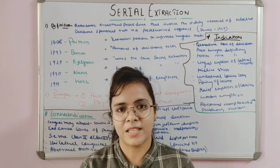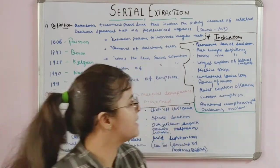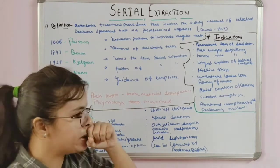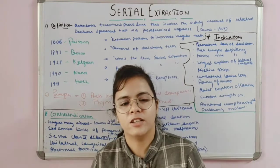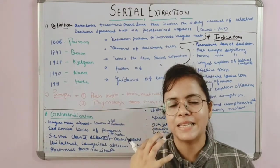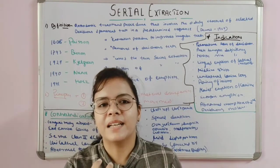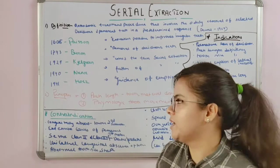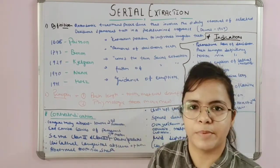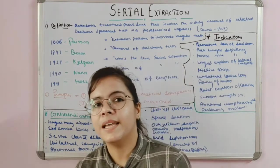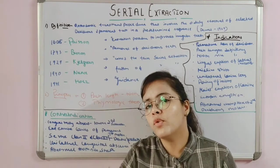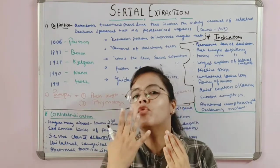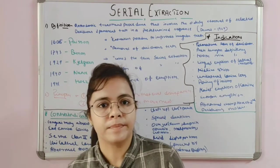There are two basic principles of serial extraction. The first is arch length-tooth material discrepancy — when the arch length is very small and tooth material is in excess, a certain number of teeth must be removed so all remaining teeth can align properly. The second principle is physiological tooth movement — human teeth have a natural tendency to move toward the extraction space, guiding alignment of the arch.